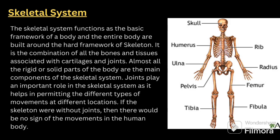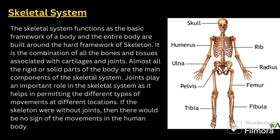So we'll get into the skeletal system. The skeletal system functions as a basic framework of the body, and the entire body is built around the hard framework of the skeleton. It is a combination of all the bones and tissues associated with cartilages and joints. Almost all the rigid or solid parts of the body are the main components of the skeletal system. Joints play an important role as they help in permitting different types of movement at different locations. If the skeleton were without joints, there would be no movement in the human body.